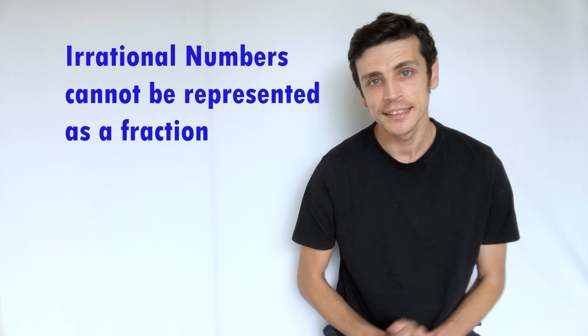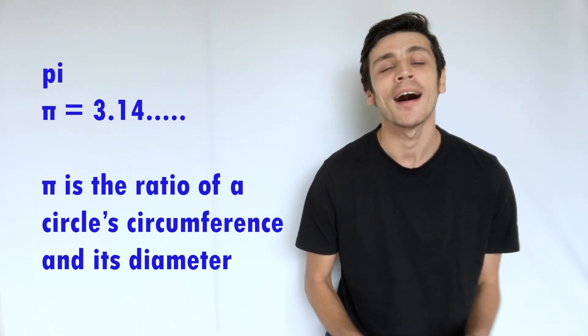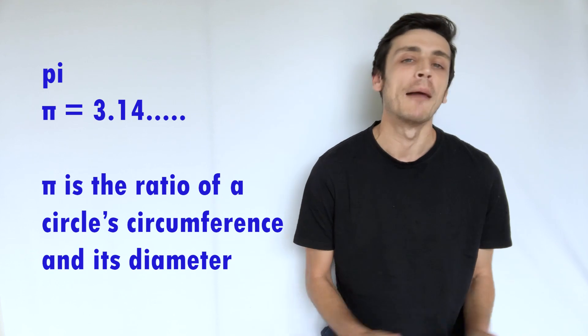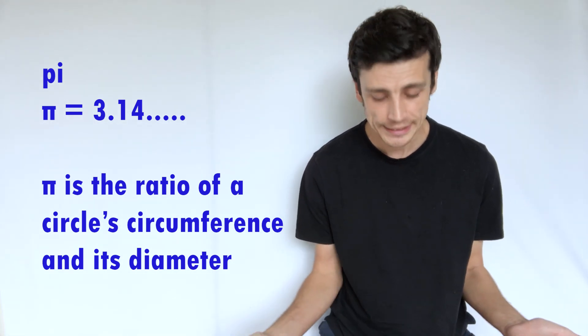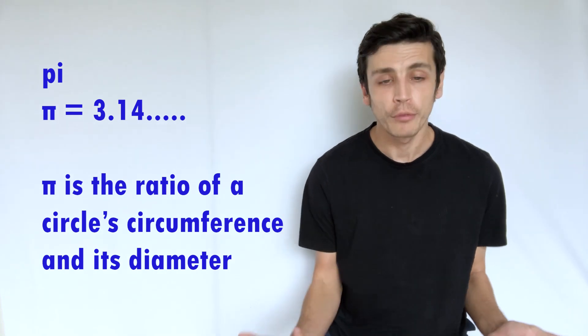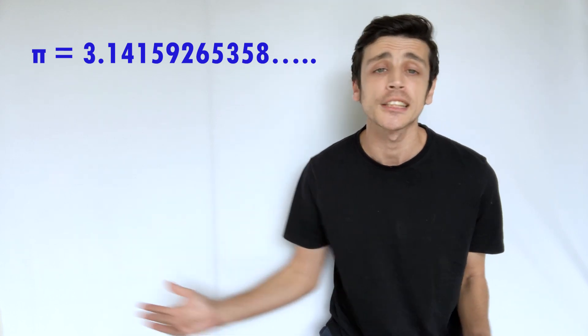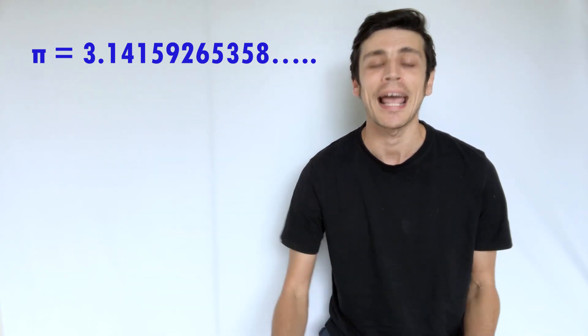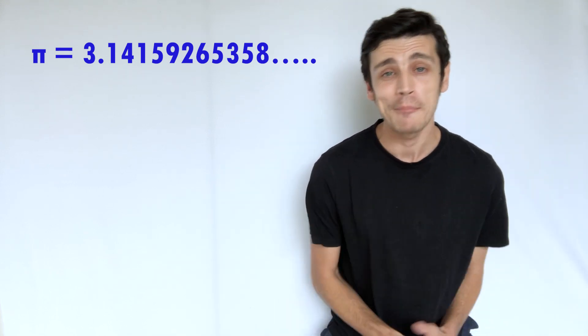And of course our most famous one of all is in fact pi. Now I'm not talking about the pie that you eat, talking about pi as in π. The 3.14 and it goes on forever. So if we take let's say pi, 3.14159265358 and it actually keeps going on and on and on forever. People actually have competitions about how far they can actually remember, how many decimal places they can remember of pi.